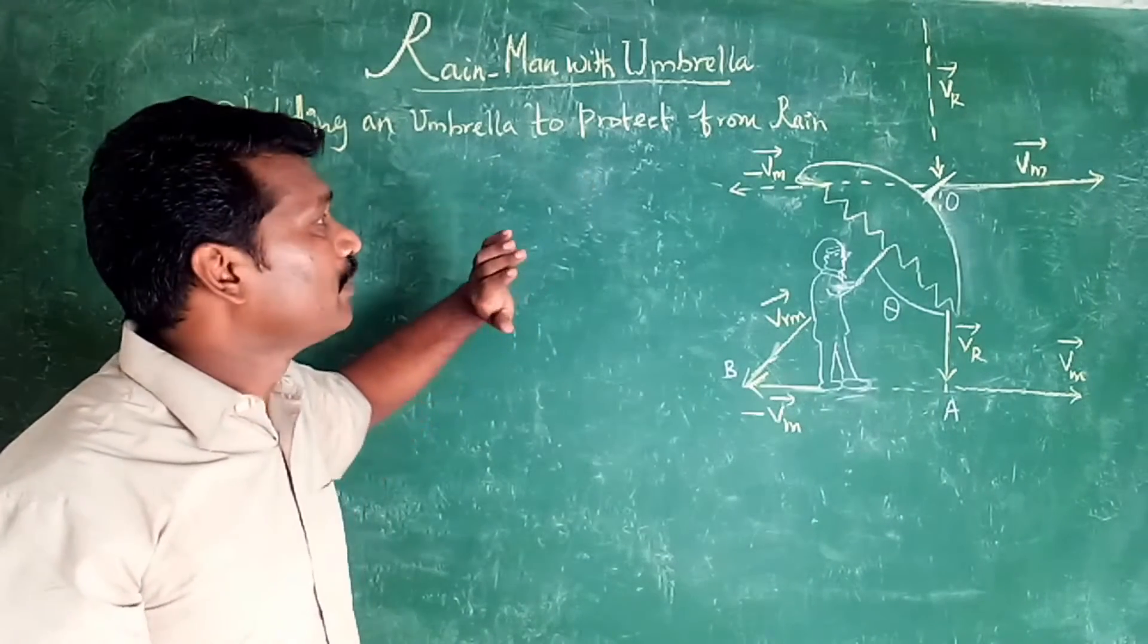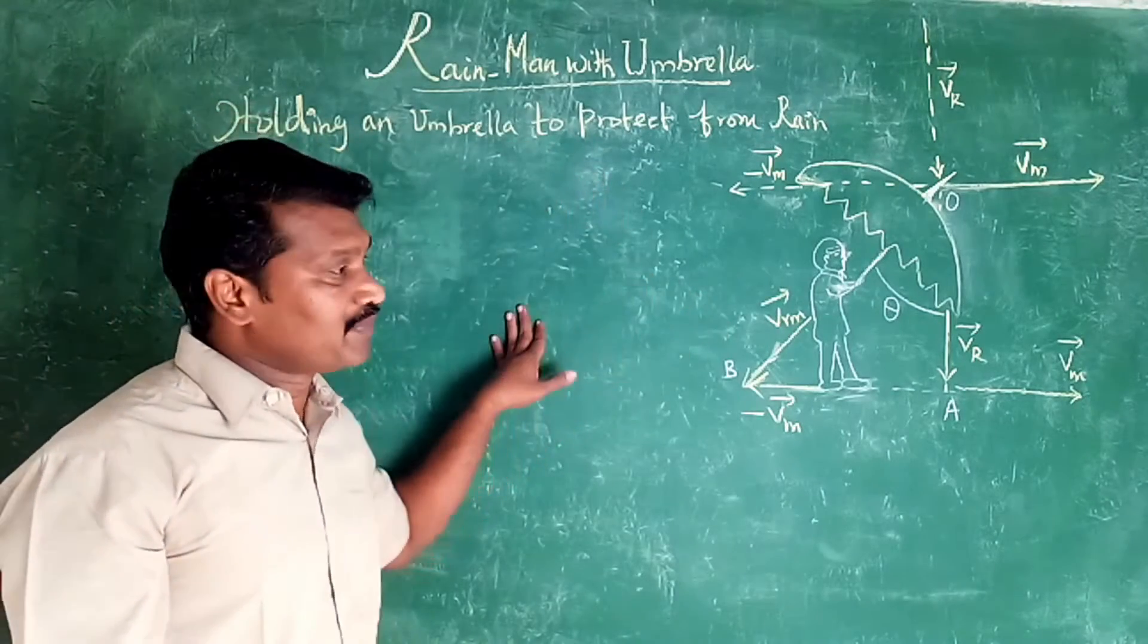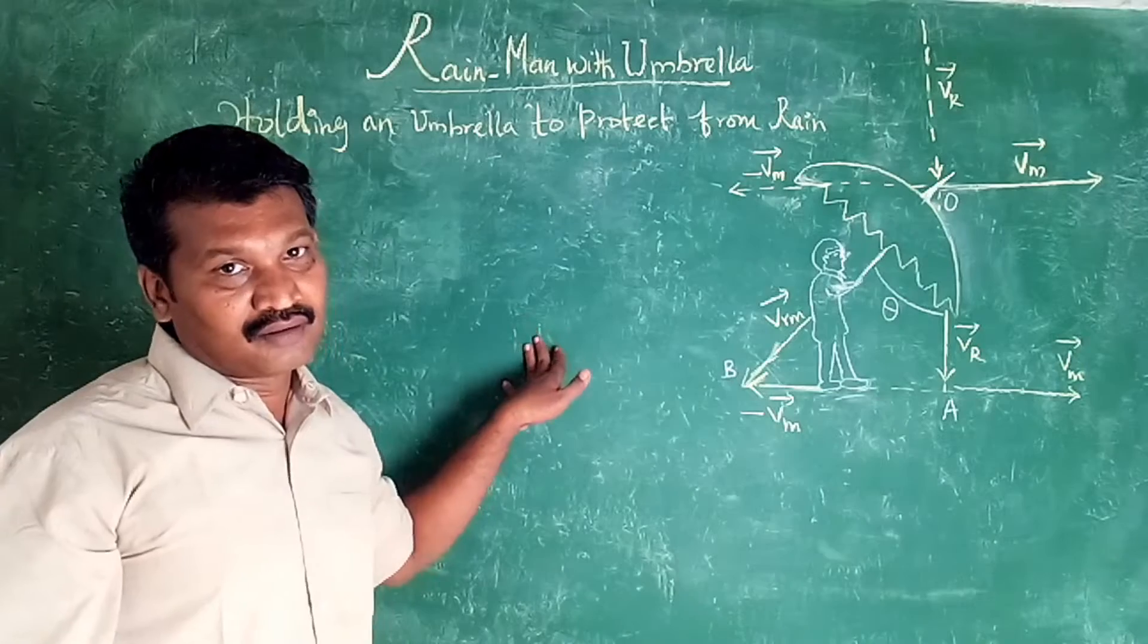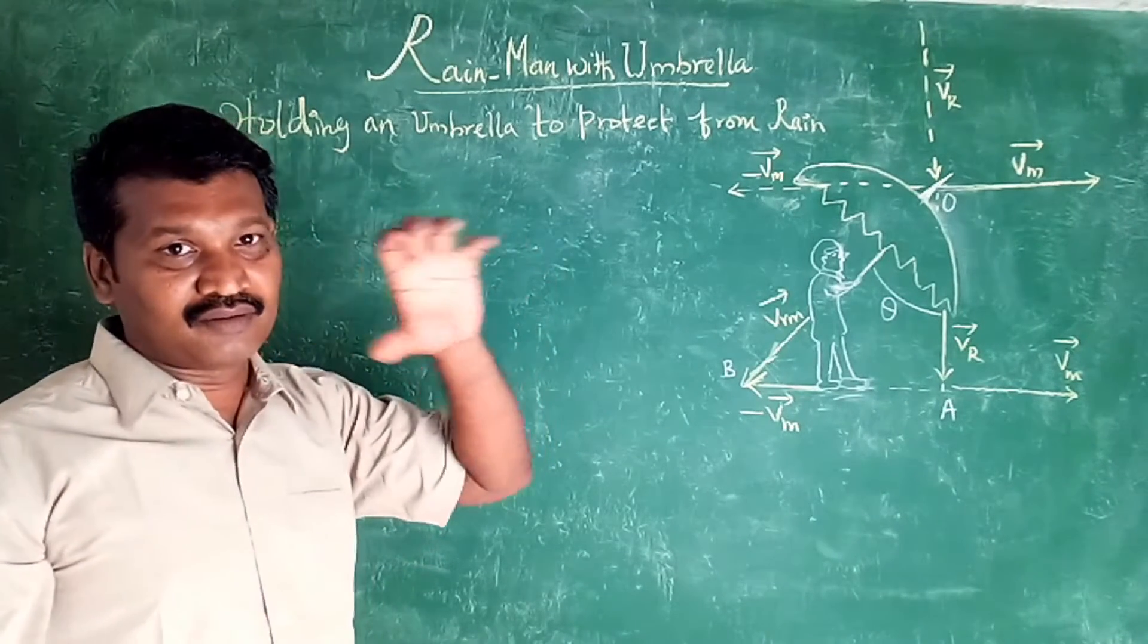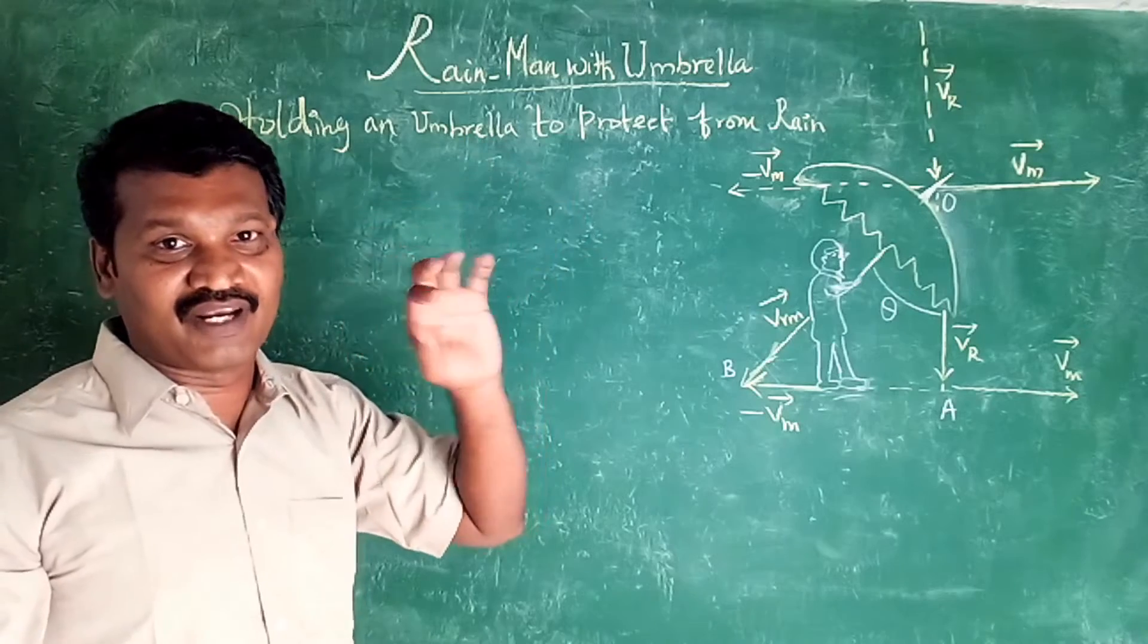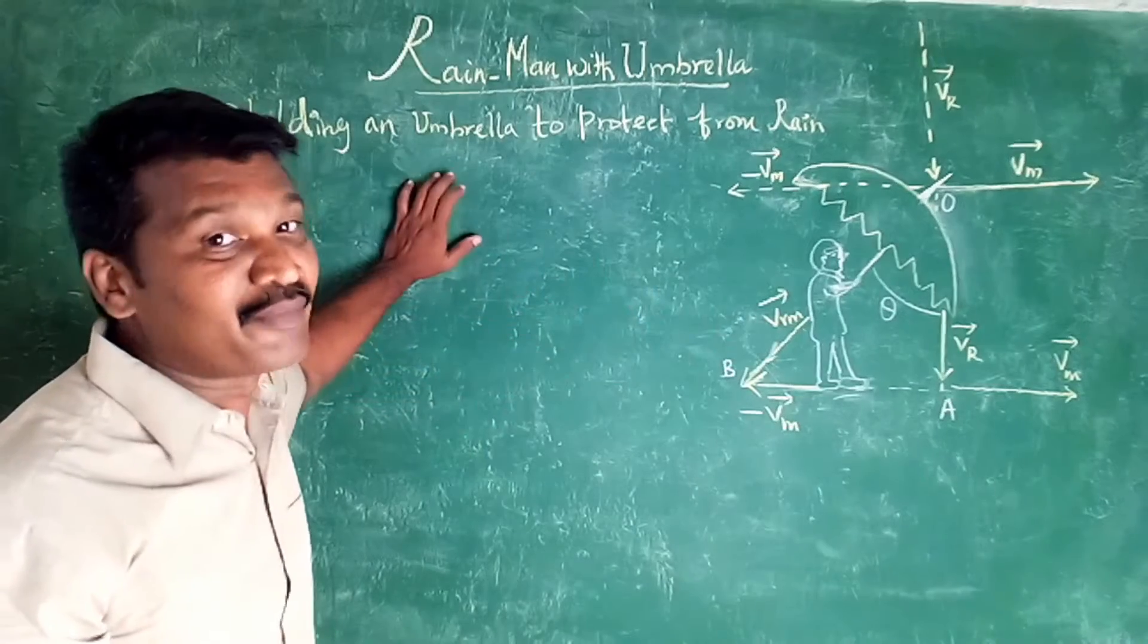He is holding an umbrella to protect from rain. So how he has to protect from rain?